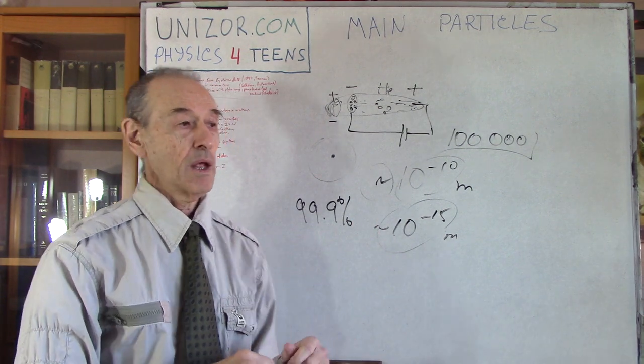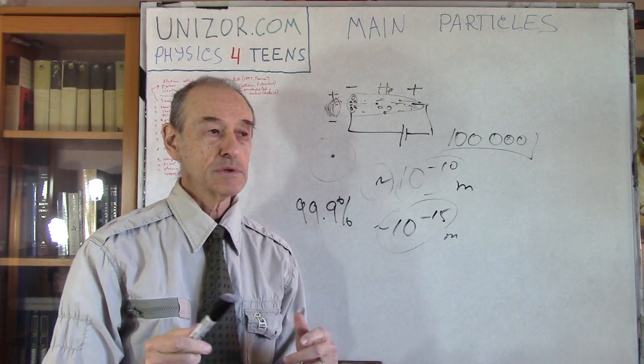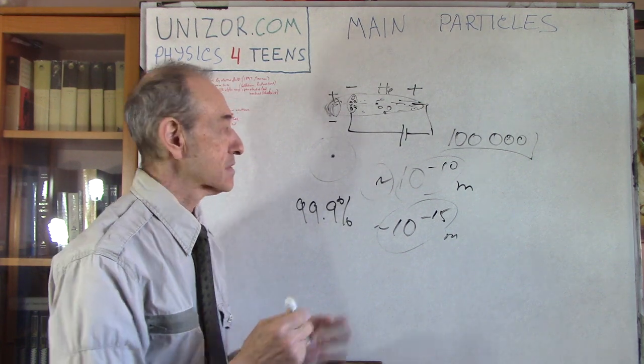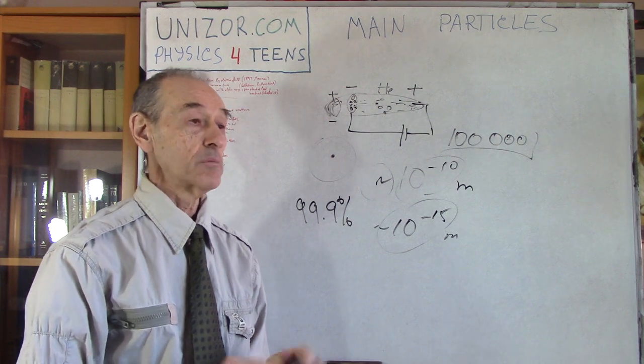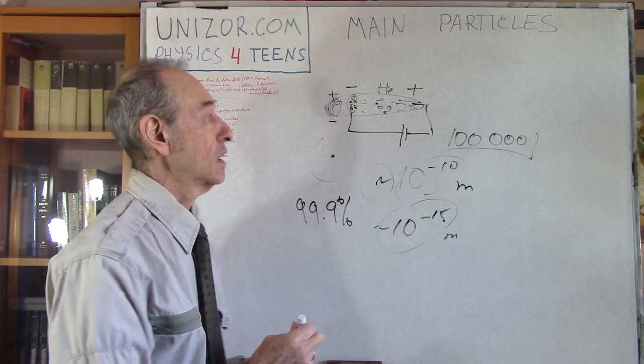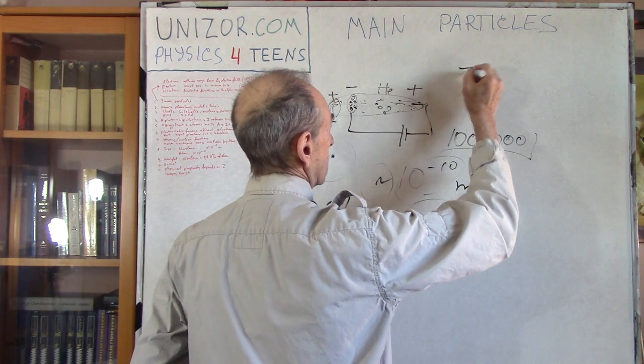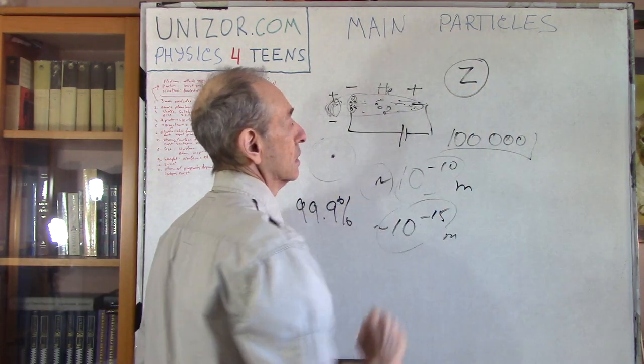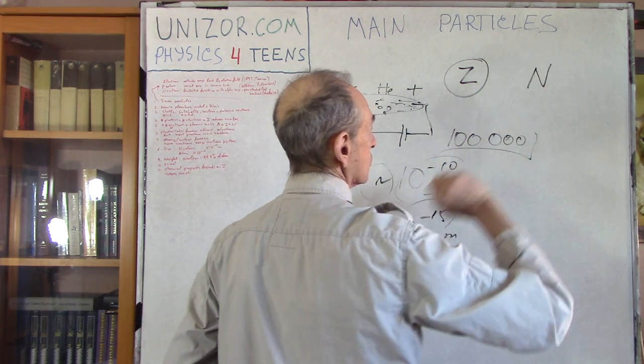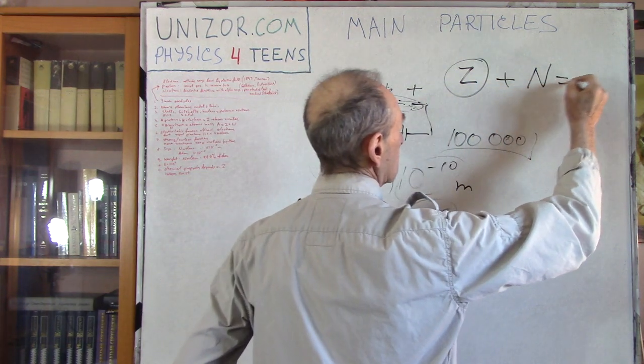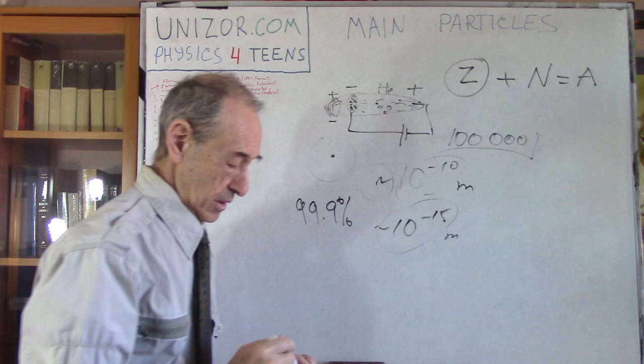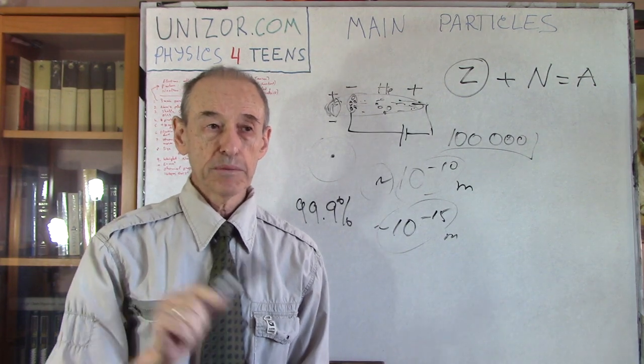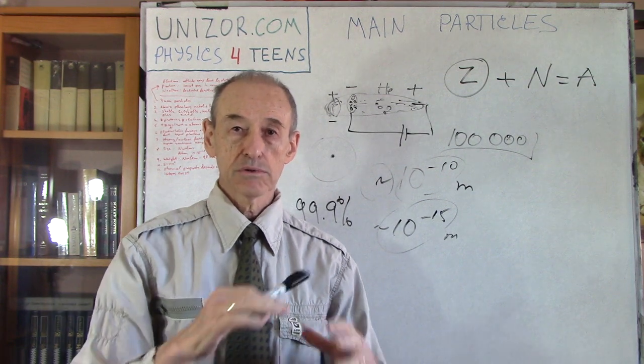It was later discovered that neutrons and protons are about the same weight and size. The difference is something like 1/10 of 1 percent. But neutrons are neutral and protons are positive. Number of protons is equal to number of electrons to keep the atom neutral and it's called atomic number Z. Number of neutrons which is usually letter N, their sum is atomic mass A.